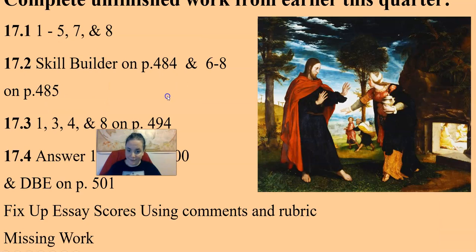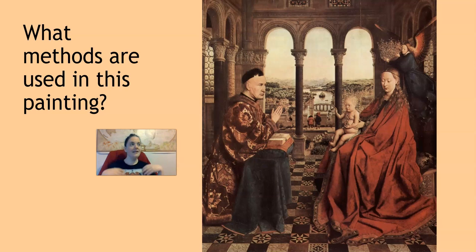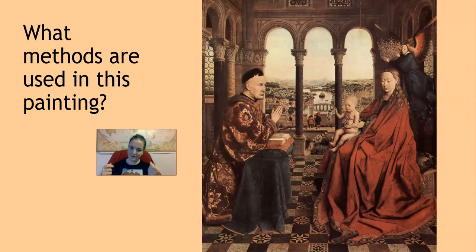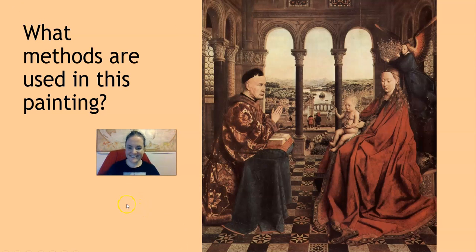That's pretty much the end. Things to remember while you go through your own painting and look for those methods: everything in a painting happens on purpose. Nothing is a coincidence — the artist is doing all of that. When you fill out the methods section, think about how are they using color, how are they using lights, how are they using shapes and lines, how are they using that to convey their message? All right, kiddos. Good luck, and I'll see you later.